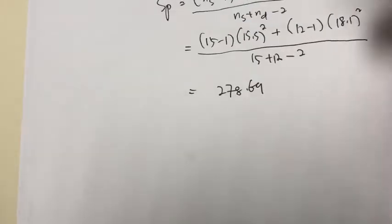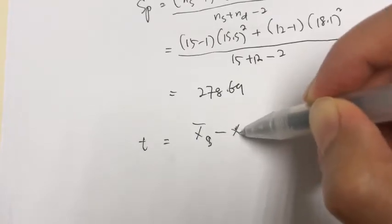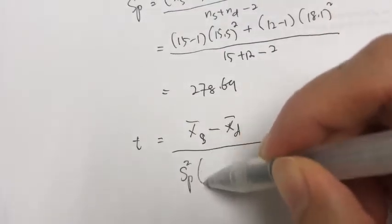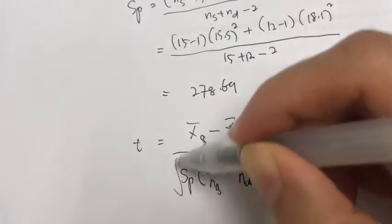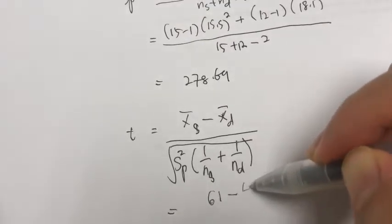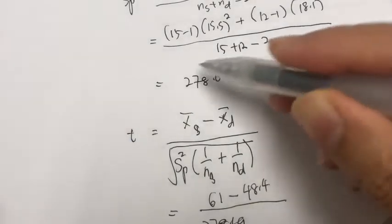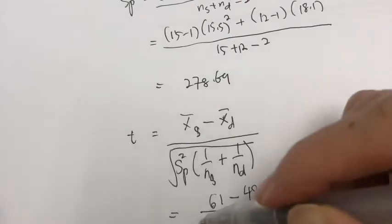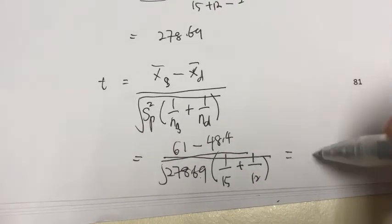Now from here we calculate the test statistic t. The numerator is the difference between the two sample means: 61 minus 48.4. In the denominator, we use the estimate of the pooled variance (278.69) times (1/15 + 1/12), then square-root the whole denominator. Working on that, we get t = 1.95.